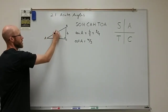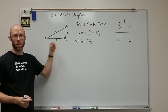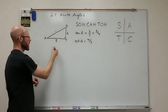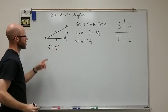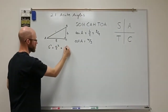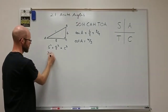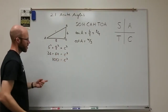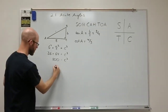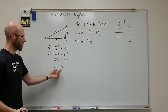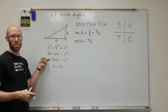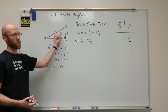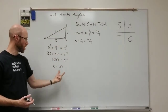I'll call this side little c, since I've labeled the opposite corner big C. The Pythagorean theorem says the sum of the squares of the two legs — six squared plus eight squared — equals c squared, the square of the hypotenuse. So 36 plus 64 equals 100. Taking the square root of both sides gives c equals 10. We only use the positive value since we're looking for a side length, so the hypotenuse is 10.